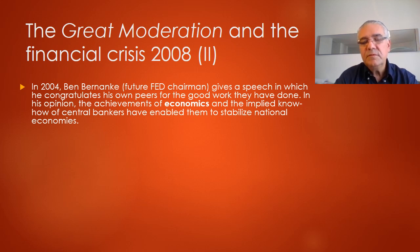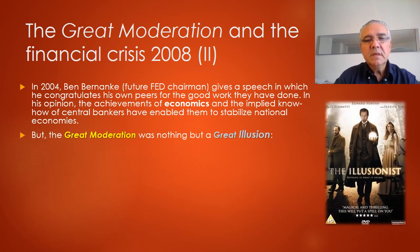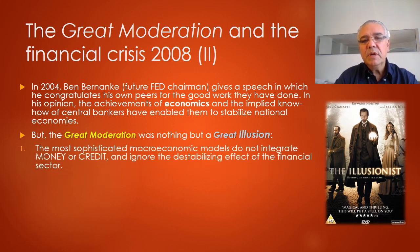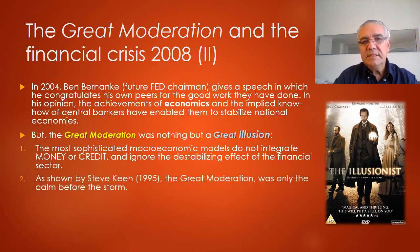This is the great moderation, but in fact the great moderation was really nothing but a great illusion. The most sophisticated macroeconomic models at that time did not integrate money or credit and ignored the potential destabilizing effect of the financial sector. As shown by Steve Keen in his work in 1995, the great moderation was leading slowly but surely to a storm — the great moderation was the calm before that storm.